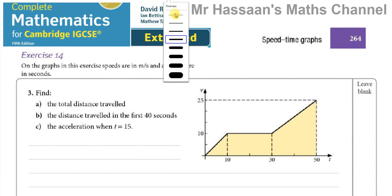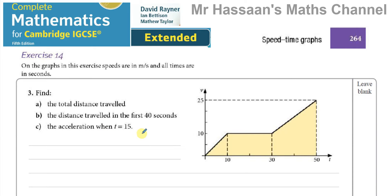This is Mr. Hassan's Maths Channel. I'm answering question number three from exercise 14 from the Extended IGCSE Complete Mathematics for Cambridge book by David Rayner. This is a question on page 264 about speed-time graphs. One of the students requested me to answer this question, and he was asking for part b, but I'll do the whole thing.